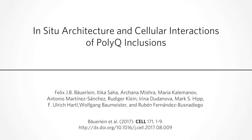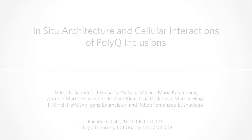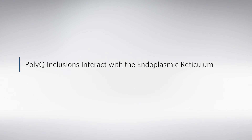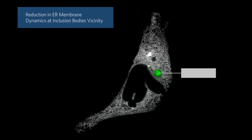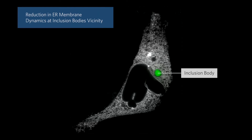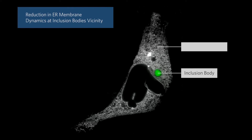Here we analyze the cellular consequences of polyQ aggregation using a variety of microscopy techniques. By live cell imaging, we observe that polyQ inclusions interact extensively with the membranes of the endoplasmic reticulum, or ER, and that these interactions lead to the abrogation of ER dynamics and other deleterious effects.